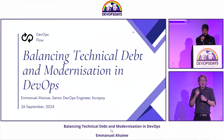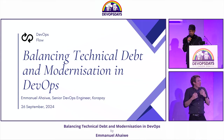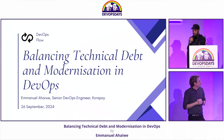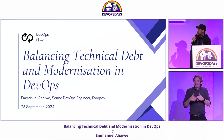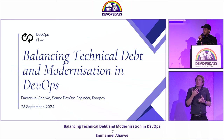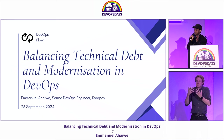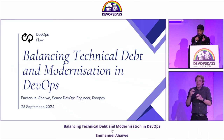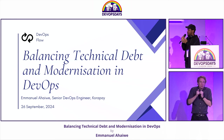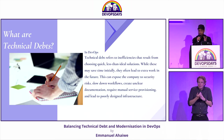I'll be giving a talk on balancing technical debts and modernization in DevOps. We've seen that sometimes when leaving legacy patterns or legacy infrastructure and moving to modernizing DevOps, there is a pushback.